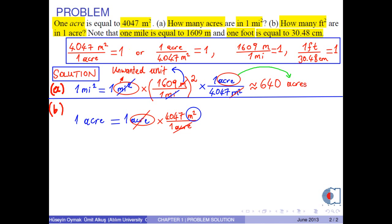We convert it into feet squared by the following procedure. In our hand, we have one foot is equal to 30.48 centimeters. To eliminate centimeters, we multiply these by the following conversion factor. Then centimeters cancel each other.